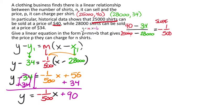I did it in y equals mx plus b form — be careful about that, because up here they said to use P and N. So the Y is the P. I'm going to take that Y and replace it with P, giving the final equation P equals negative 1 over 500 N plus 90.